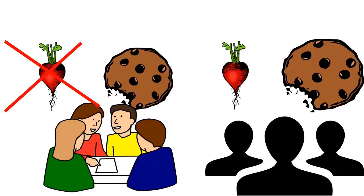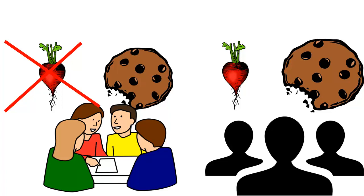Well, the group that wasn't allowed to eat radishes and the group that was allowed to eat whatever they wanted, they lasted about 20 minutes, and then they gave up. That group, the other one, that couldn't eat chocolate chip cookies, they gave up almost instantaneously.